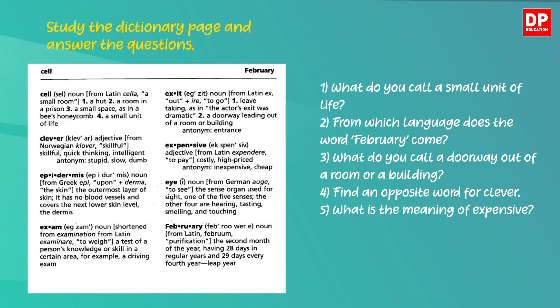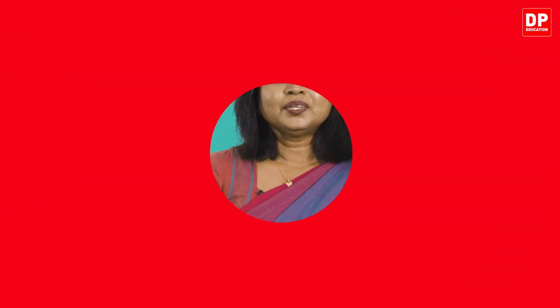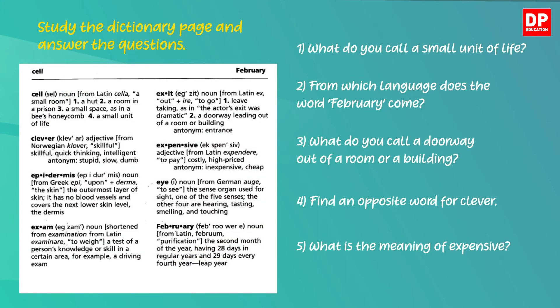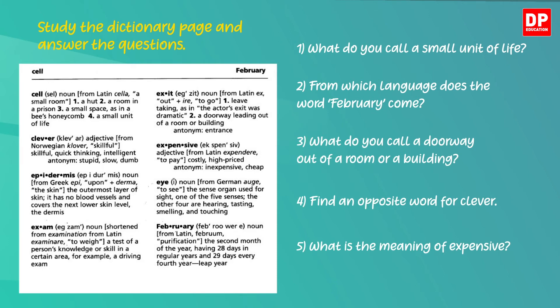These are the five questions. You can pause the video and answer them now. Okay let's see whether you could answer correctly. What about the first one? What do you call a small unit of life? Look at the dictionary page — it's the very first entry. A small unit of life is called a cell.